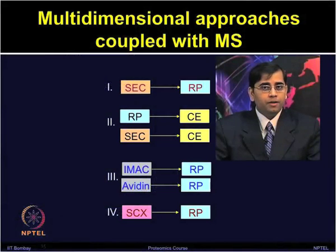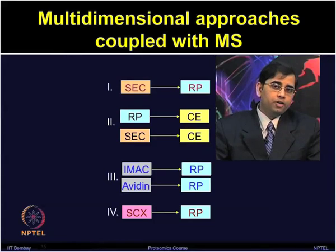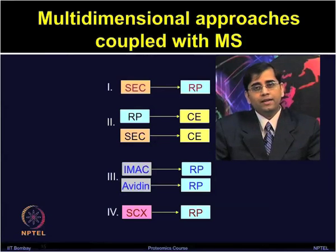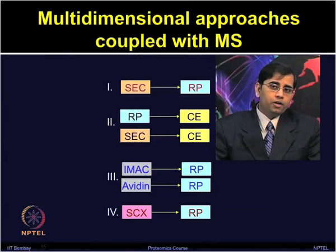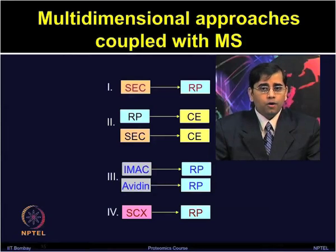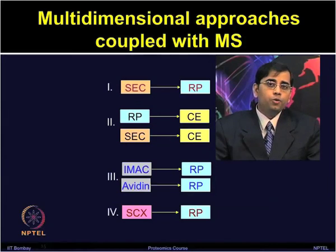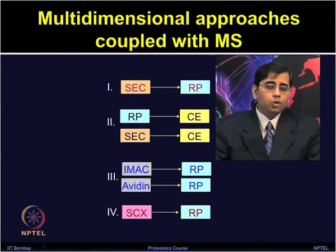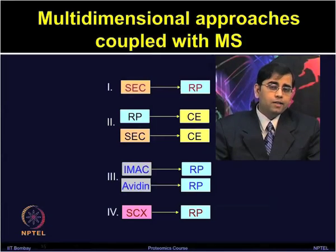Different approaches have been tried; for example, size exclusion chromatography followed by reverse phase chromatography, but it has resulted in poor resolution of peptides in size exclusion chromatography, so it is not very widely used. Other approaches include reverse phase chromatography followed by capillary electrophoresis, or size exclusion followed by capillary electrophoresis. Due to limited loading capacity and low loading volume of capillary electrophoresis, those are also not very popular. Affinity chromatography-based separations such as IMAC or avidin followed by reverse phase chromatography, and strong cation exchange followed by reverse phase, are most commonly used.